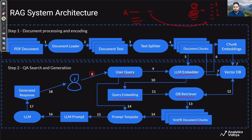Once we have the similar document chunks, we send our actual question and these relevant document chunks to a large language model like ChatGPT. The similar document chunks along with our question are sent into a LangChain prompt template. This prompt template constructs an LLM prompt saying: given these relevant document chunks and this relevant contextual information, can you answer this question only using these document chunks? This prompt is sent to a large language model like ChatGPT, which generates a response based on these documents to answer our question. That response is then sent back to the user, who will see it in the app interface.